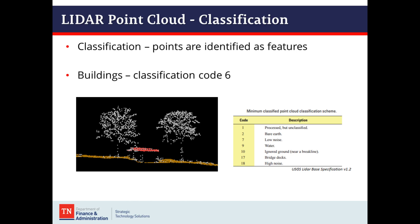One last thing to cover about the point cloud is classification. Classification is where points are identified as features. With our 3DEP data, they were classified to a minimum point cloud classification scheme. We also had buildings classified as classification code 6. In the example on the bottom left, you can see that trees are not classified as vegetation — they're unclassified because that is not in the minimum classification scheme.